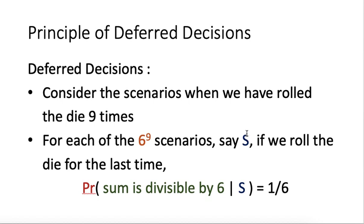When S happens, the results of the first 9 rolls are already fixed to some value — say, 17. In order to have the final sum divisible by 6, the last roll must equal a specific value; in this case, it must be a 1. There is exactly one choice among the six possible outcomes of the last die that makes the sum a multiple of 6. So given S, the chance the sum is divisible by 6 is always 1 over 6, no matter which S we are talking about.